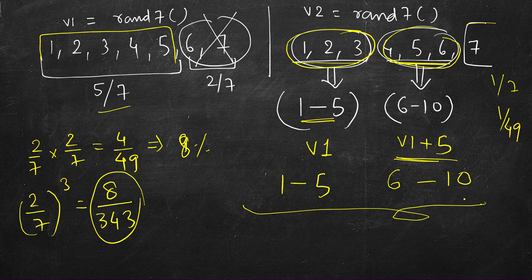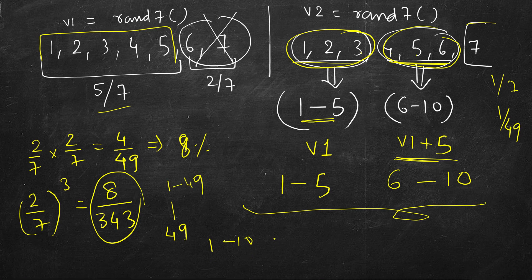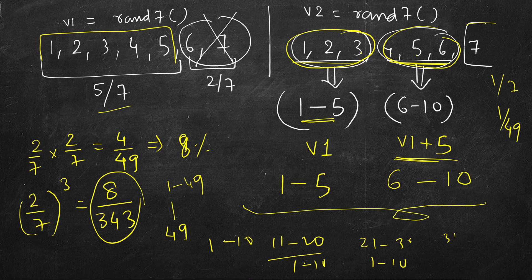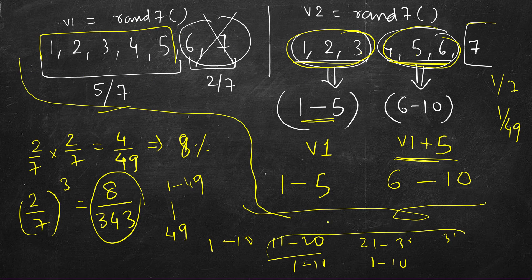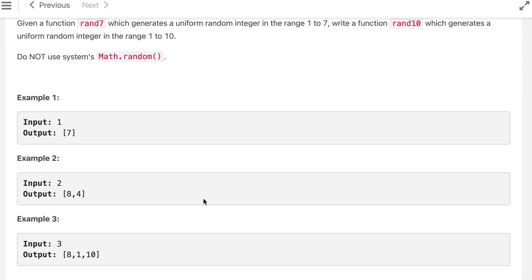There are many other ways to do this. For example, you could call rand7 twice to get 49 possibilities and map groups of 10: 1–10 map to 1–10, 11–20 map to 1–10, 21–30 map to 1–10, 31–40 map to 1–10, and ignore the remaining values. But we'll code the current approach — it looks elegant and should be just about four lines of code.